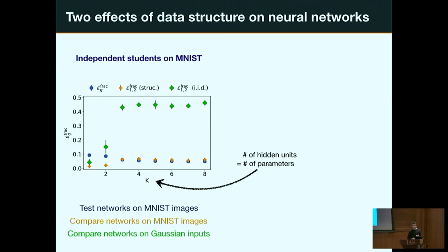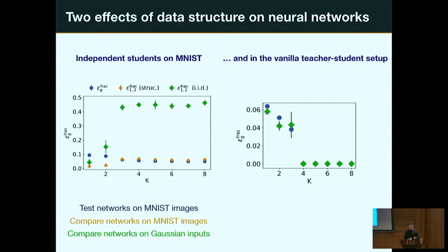This is quite interesting because it tells us something about overfitting: as we extrapolate and test the networks away from the MNIST manifold, they do crazy things not correlated with each other at all. Yet this does not hurt generalization, because they still agree on the MNIST manifold. By contrast, in the teacher-student setup, increasing the number of parameters causes the two networks to converge in function space — they learn pretty much the same function regardless of initialization.